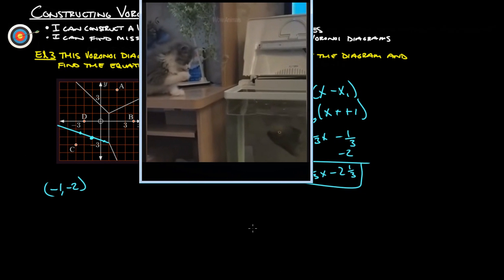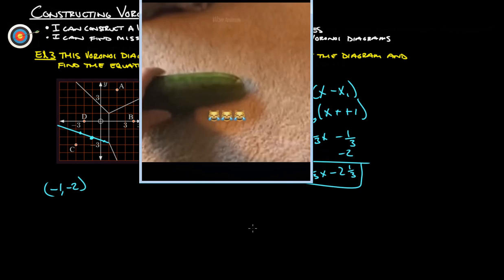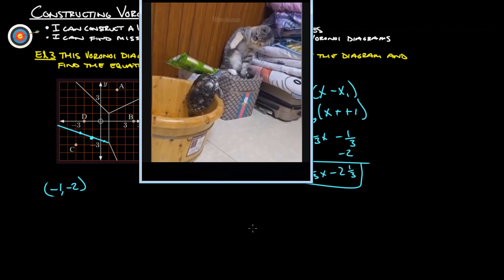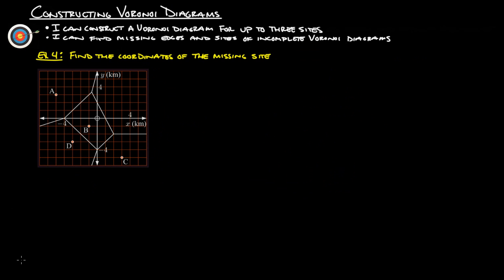We have one more example. Last one here. Find the coordinates of the missing site. So we've got, it's going to be something up here. So it's going to be equidistant from these two, actually all three of these lines here. So really what we can do here is this piece here, we know that C is one, two, three units away here. So this line here should be separating C from whatever this is over here. So one, two, three. This should be pretty close to our spot.